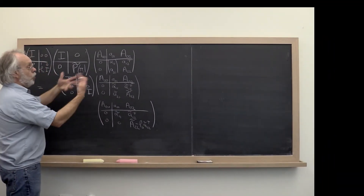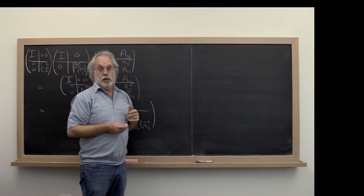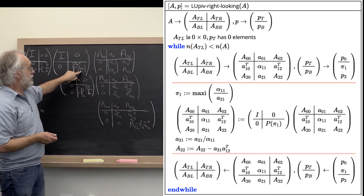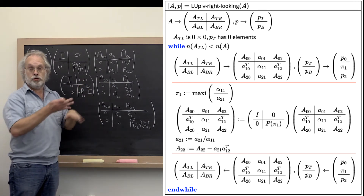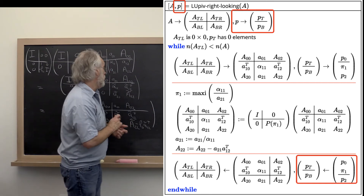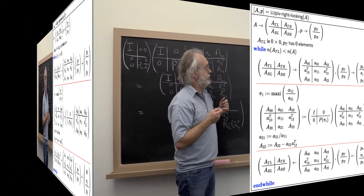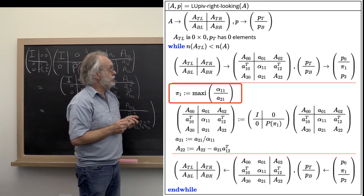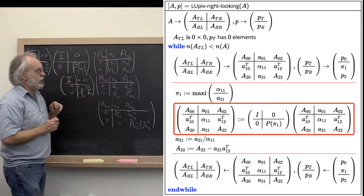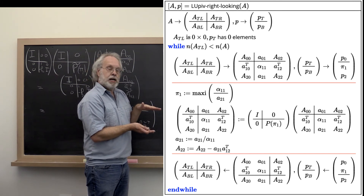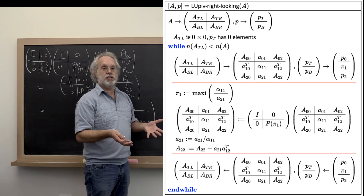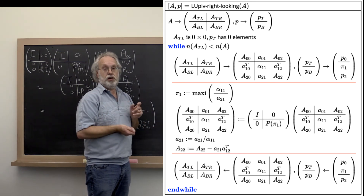How do we incorporate that into our right-looking algorithm? We want to keep track of this vector of integers that tells us which rows to pivot — which rows to swap. So we introduce a vector p that keeps track of these, and we partition and repartition that vector to expose pi_1 at the appropriate moment. We compute the index of the element with maximal magnitude, then swap the appropriate rows — and notice we're not only swapping the two rows we talked about, but also swapping the multipliers computed in previous iterations. That turns out to be very important in order to end up with an LU factorization with matrix A as if it had been pre-permuted.